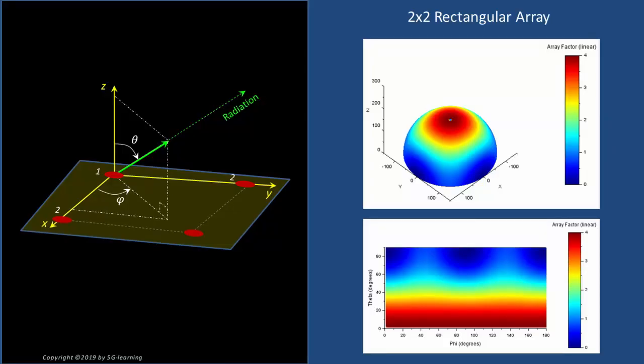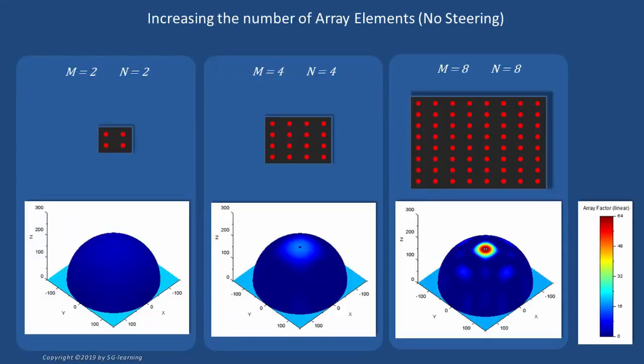3D patterns of rectangular arrays. In the 3D radiation pattern of a rectangular array, we observe an approximately circular high-intensity region. Therefore, the rectangular array is able to concentrate its radiated energy on a smaller area than the linear array — we say it provides a smaller footprint. Increasing the number of array elements has two consequences: the array factor increases everywhere on the whole sphere, and the size of the high-intensity footprint becomes smaller, improving the array focusing capability.